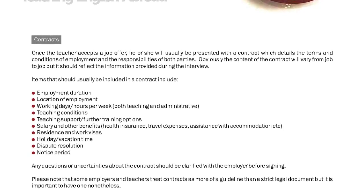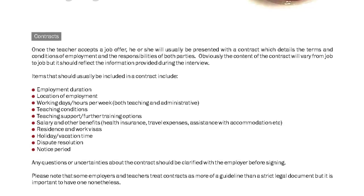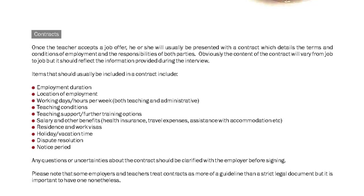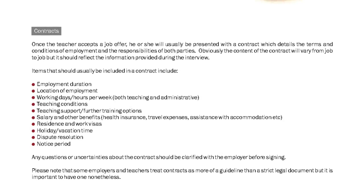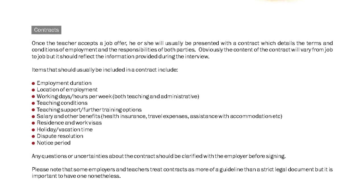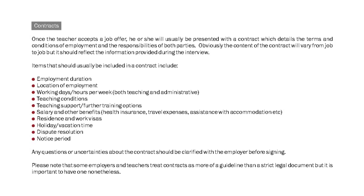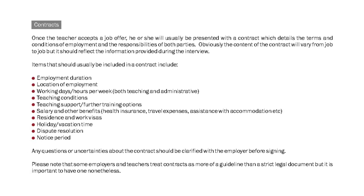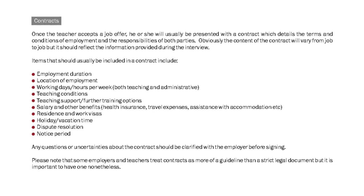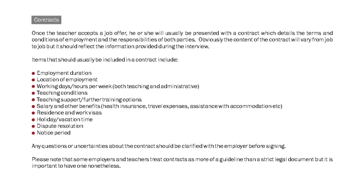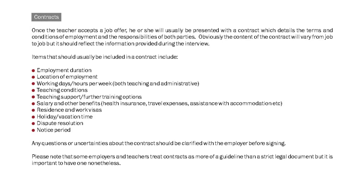Items that should usually be included in a contract include: employment duration, location of employment, working days and hours per week — both teaching and administrative — teaching conditions, teaching support and further training options, salary and other benefits, health insurance, travel expenses, and assistance with accommodation.